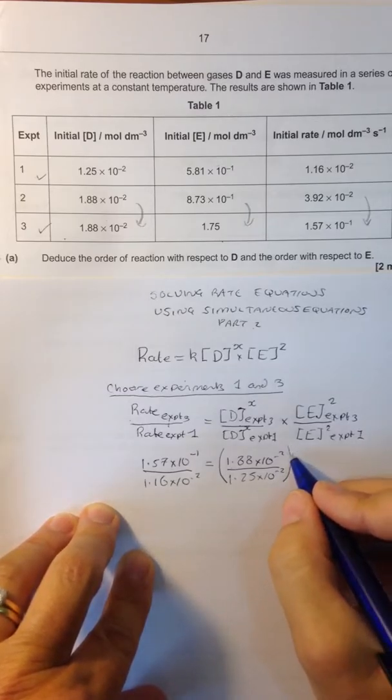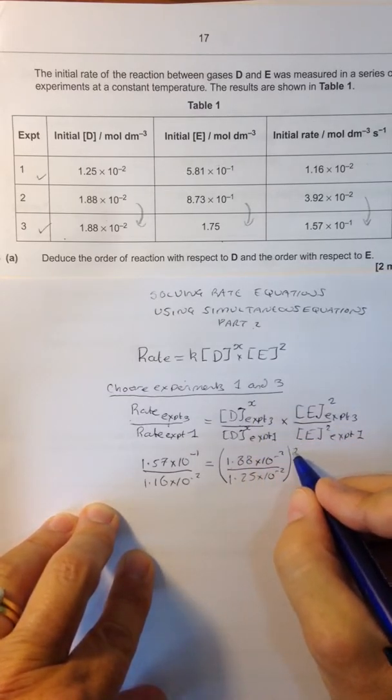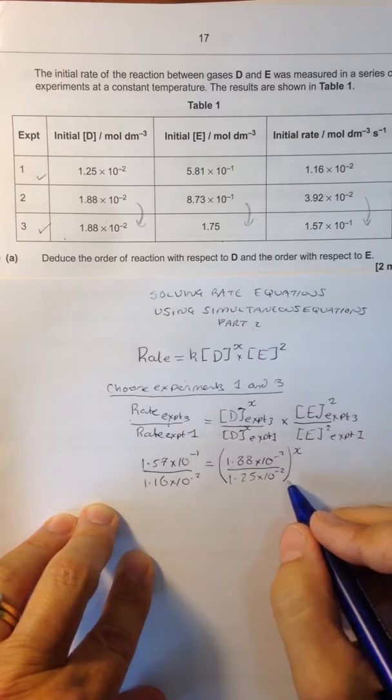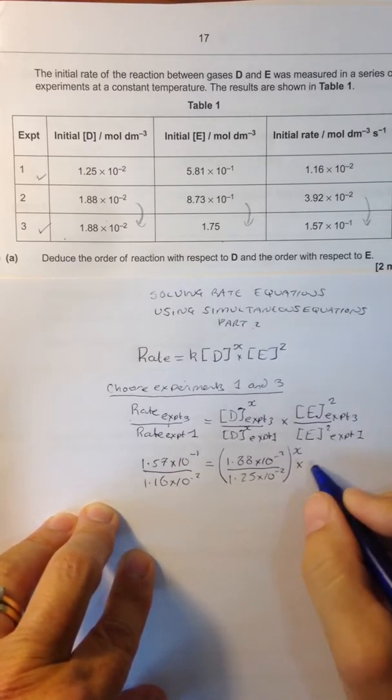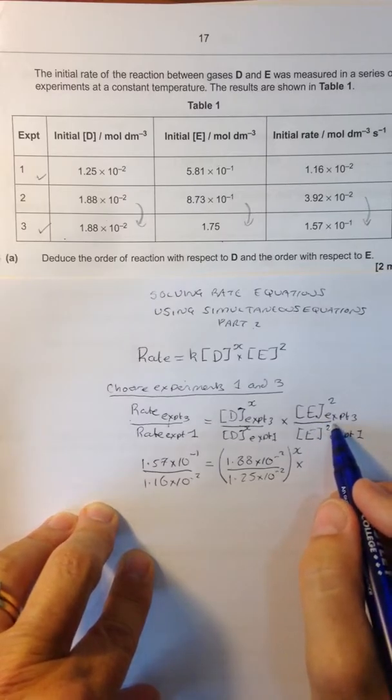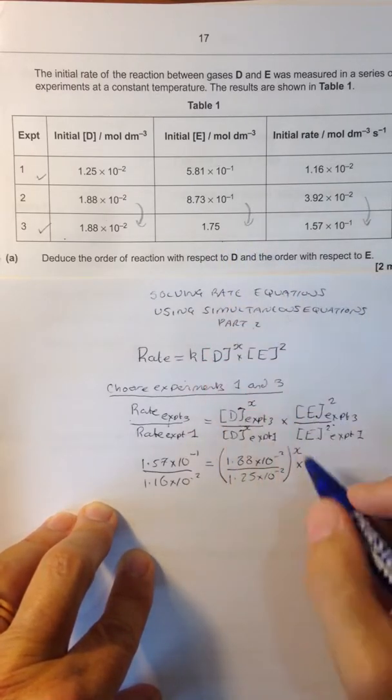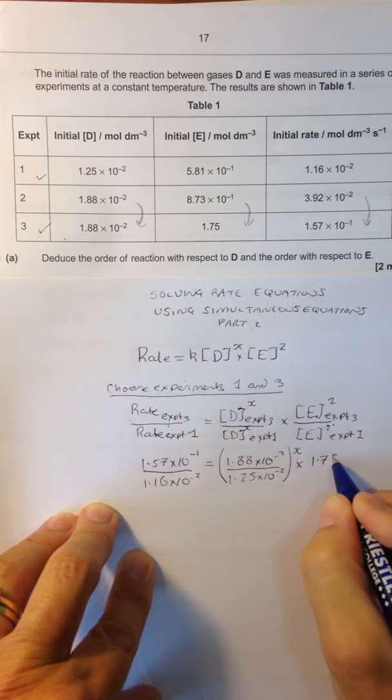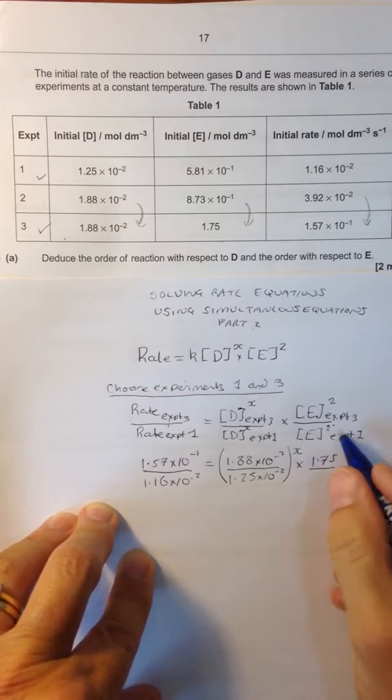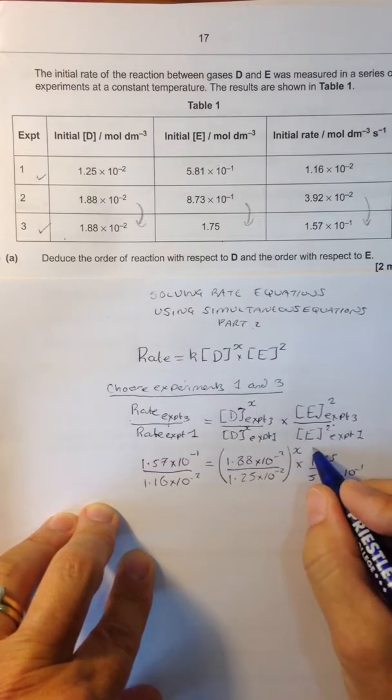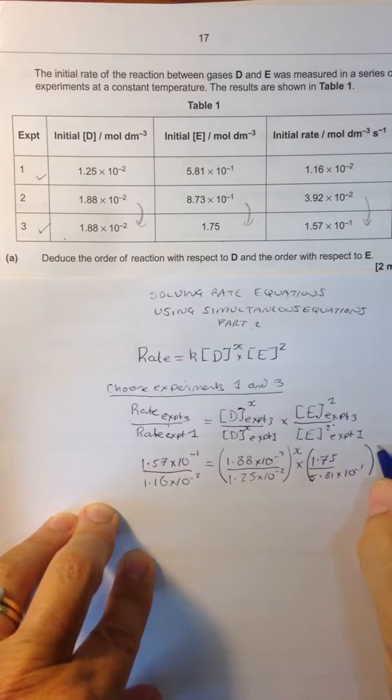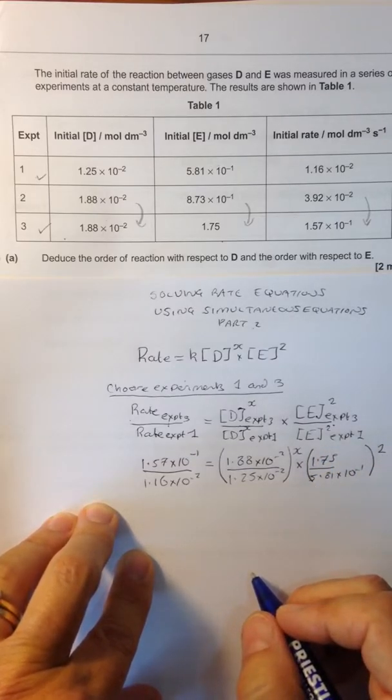We don't know the order with respect to D, but since the order is the same, we can simplify that, raising it to the power of X. We also know the concentration of E in experiment 3 is 1.75, divided by the concentration of E in experiment 1, which is 5.81 times 10 to the minus 1. And we know that that's second order, so we can square it.